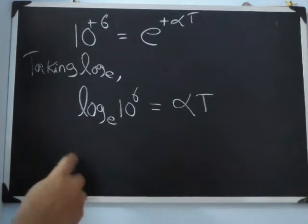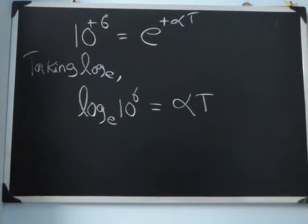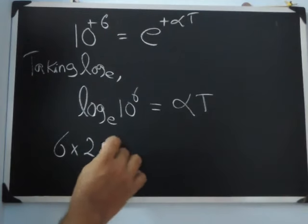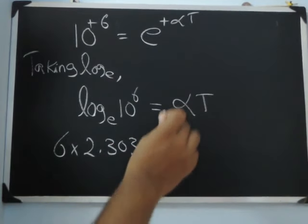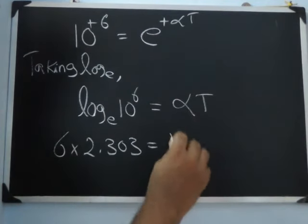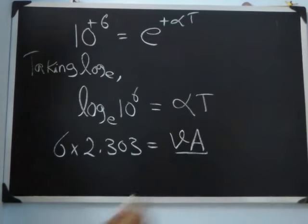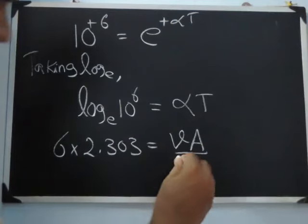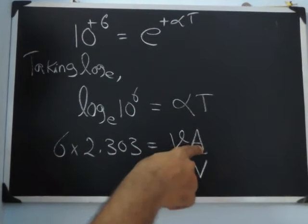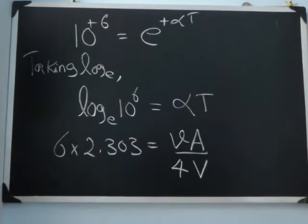This is 6 log 10. Log 10 is 2.303, so we have 6 into 2.303 equals alpha T, where alpha is vA by 4V, where v is the velocity of sound, A is the sum of all the surfaces into their absorption coefficient, V is the volume of the hall.